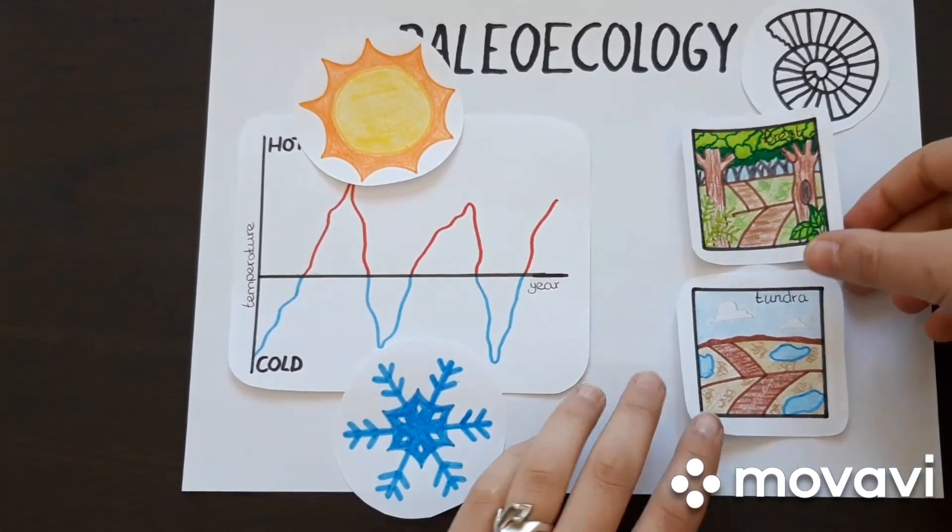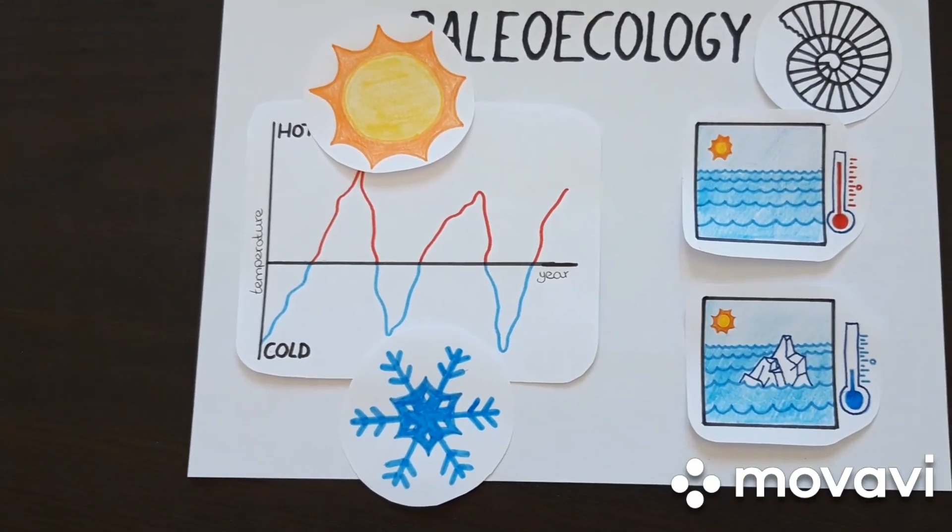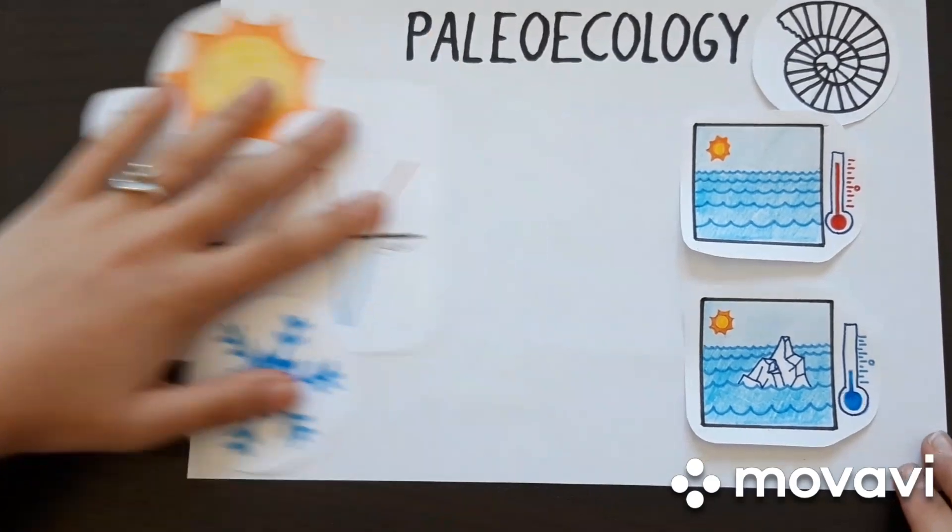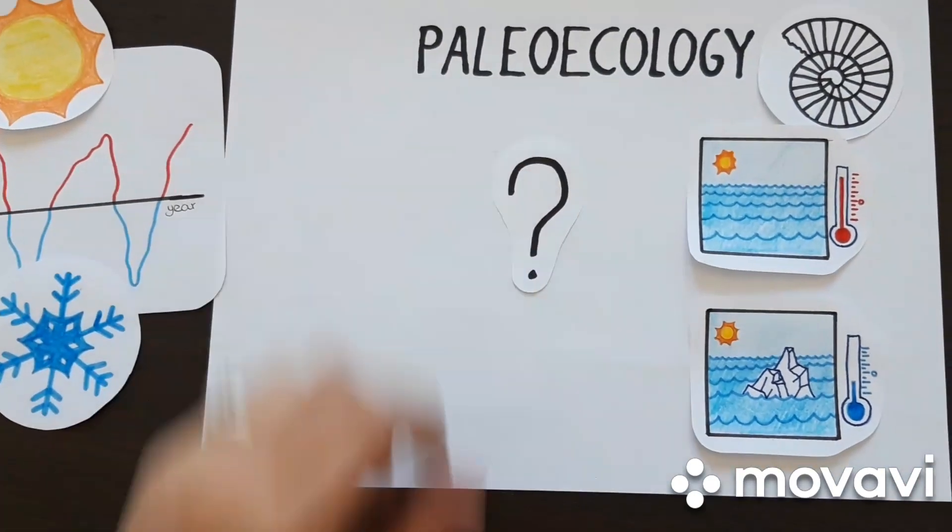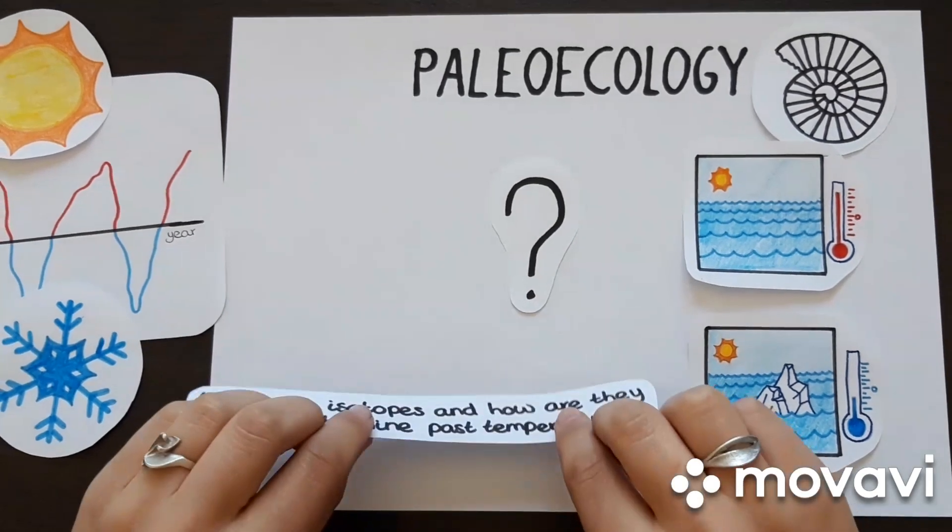A reason for the constant shifts in climates are the occurrences of glacial periods with cold temperatures, interspersed with interglacial periods with warmer temperatures. But how is it investigated when there has been a cold and when there has been a warm period in the past?